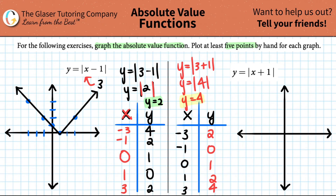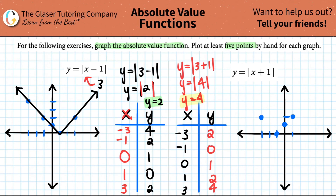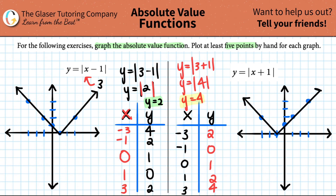Now I have my five points and I'm ready to plot. Negative three and two goes right here. Negative one and zero is right here. Zero comma one is right up here. One comma two is here. And three comma four — three over and four up — right up here. We still have that telltale sign of a V shape, coming down and bouncing right back up.